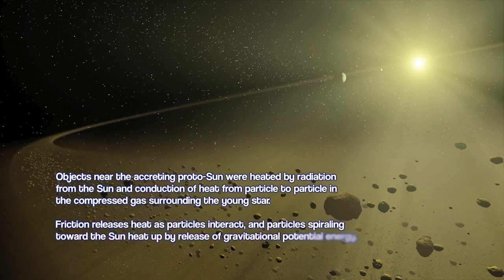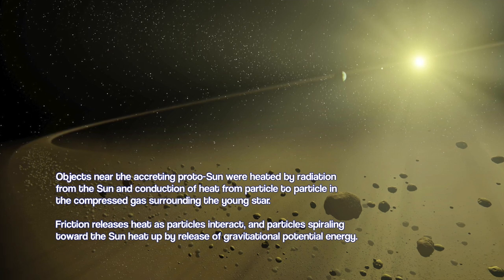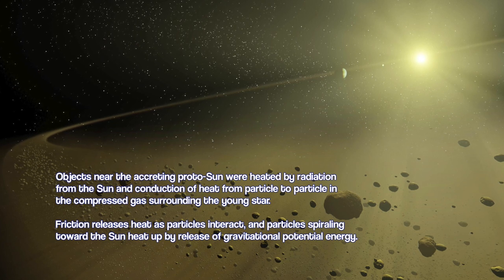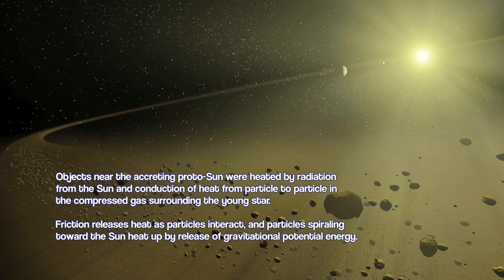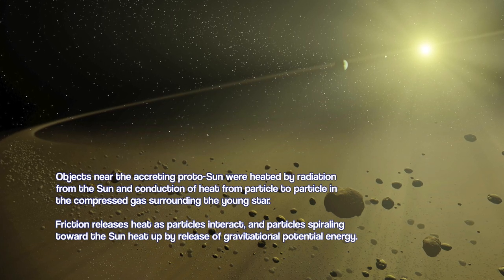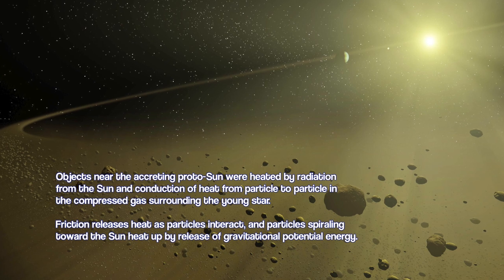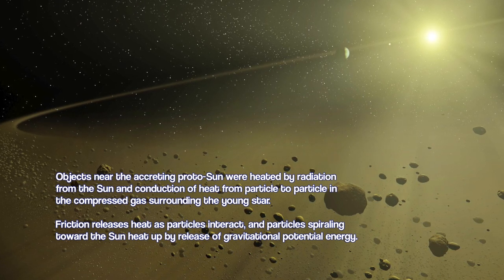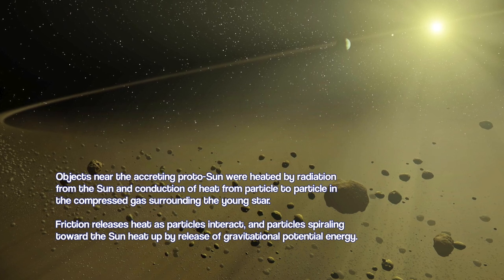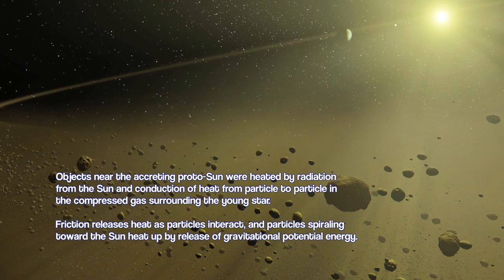So while all this is going on, objects near the Sun are being heated up incredibly compared to objects farther from the Sun. The inner solar system is much hotter than it would be from just the Sun alone radiating as it does to us today. At the time, we're talking during accretion, the Sun is shrouded with gas and dust, so a lot of heat is being conducted directly from the Sun outwards through these clouds and heating them up.